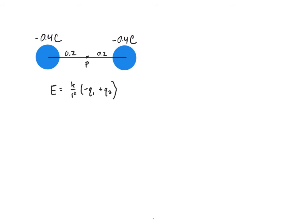I can use that same equation I used in the previous problem. But if I look at this single part of it, that negative Q1 plus Q2, what I get is negative 0.4 plus 0.4 or 0. So the electrical field halfway between two equal charges of the same sign is going to be 0 newtons per coulomb, which means that if I stuck a charge directly in between these two negative 0.4 coulomb charges, it would feel nothing.